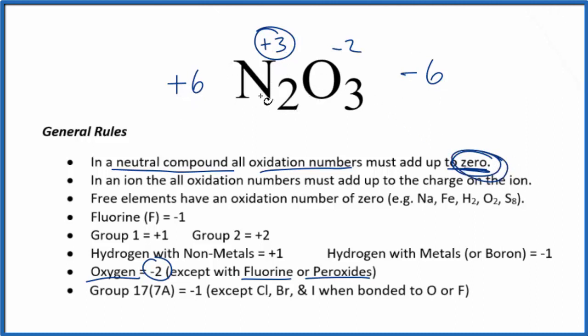So the oxidation number on each nitrogen in N2O3 is positive three.